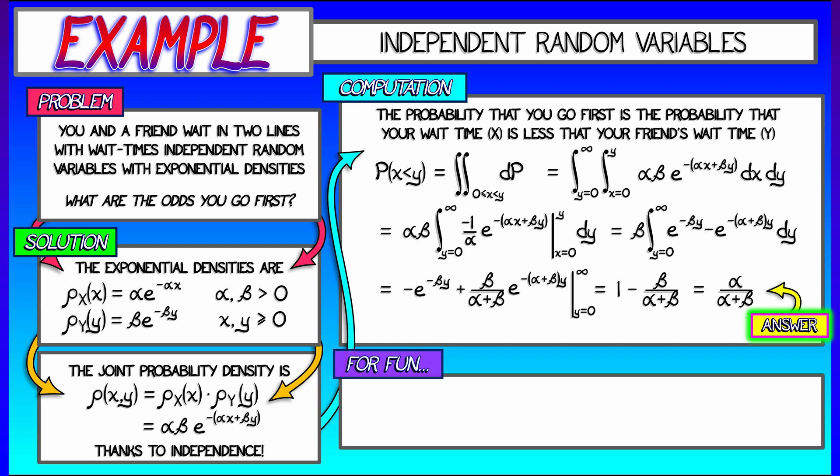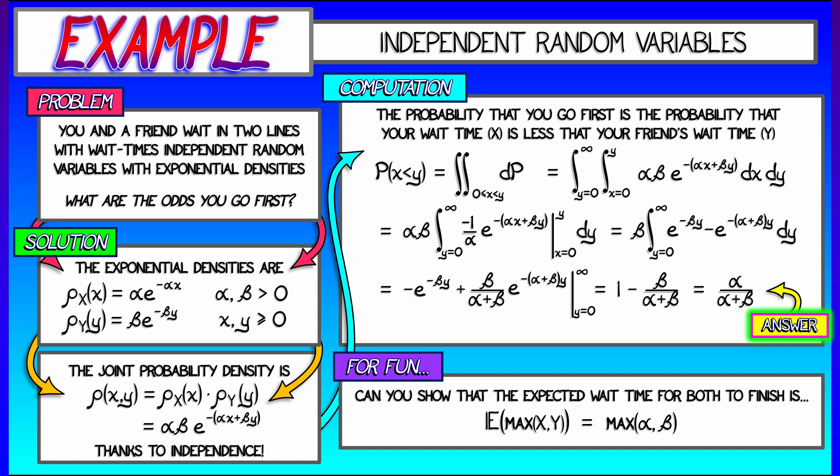Now there's more you can do. For fun, you could show that the expected wait time for both you and your friend to finish, that is, the expectation of the variable that is the maximum of x and y is, with a little bit of work, the maximum of α and β. That's kind of a fun problem. Maybe play around with that.